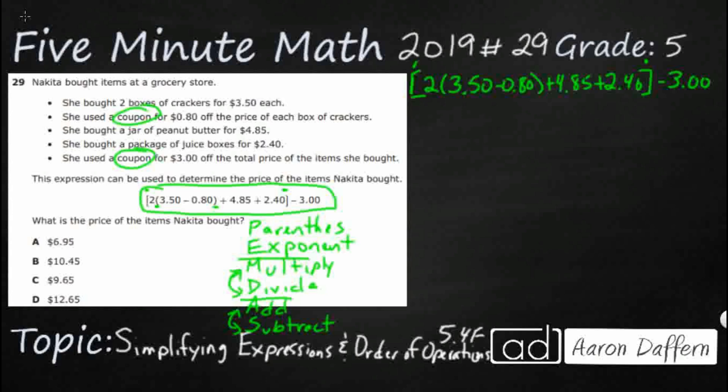Within that parentheses, we still follow order of operations, which means within that bracket, if there's a parentheses, we deal with that first, which means this is what we're dealing with first. So we're going to rewrite everything else. We're going to say 2 parentheses and let's just do our 3.50 minus 0.80. And that's going to be 2.70. So $2.70. And let's just rewrite everything else. Plus 4.85 plus 2.40.